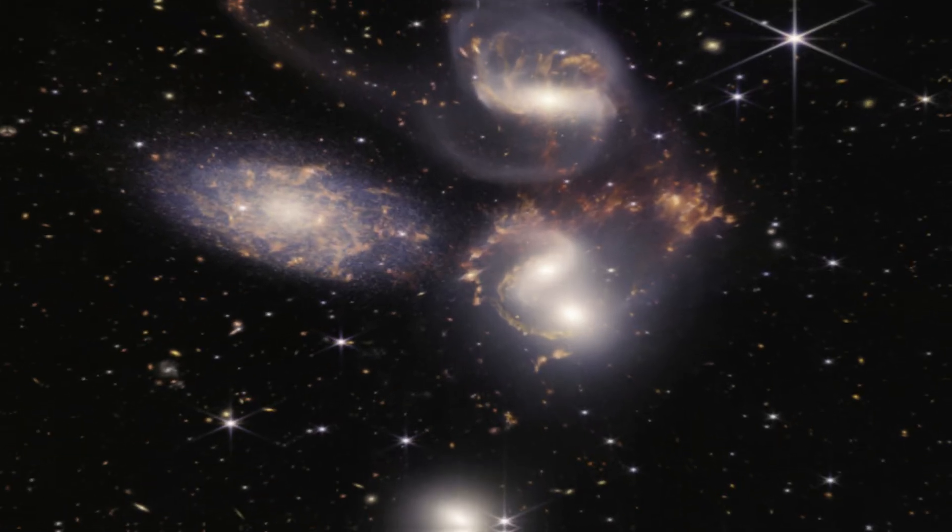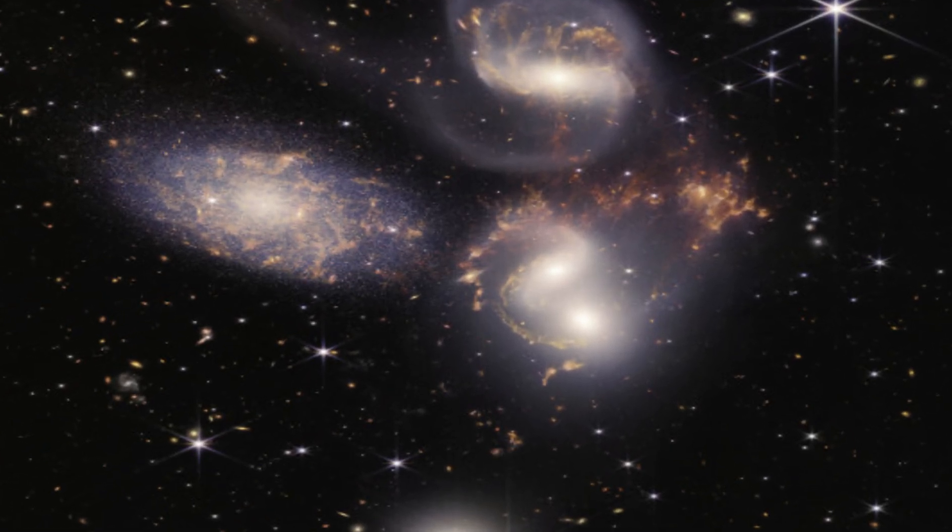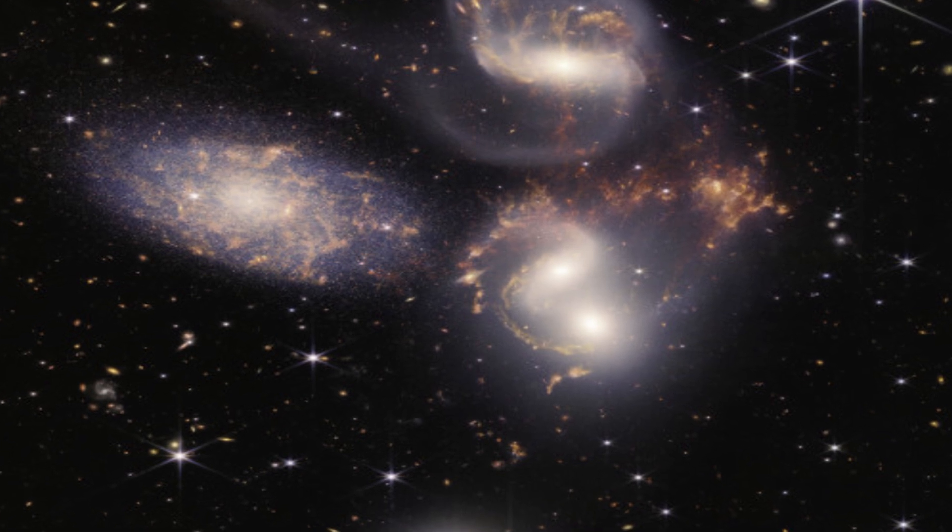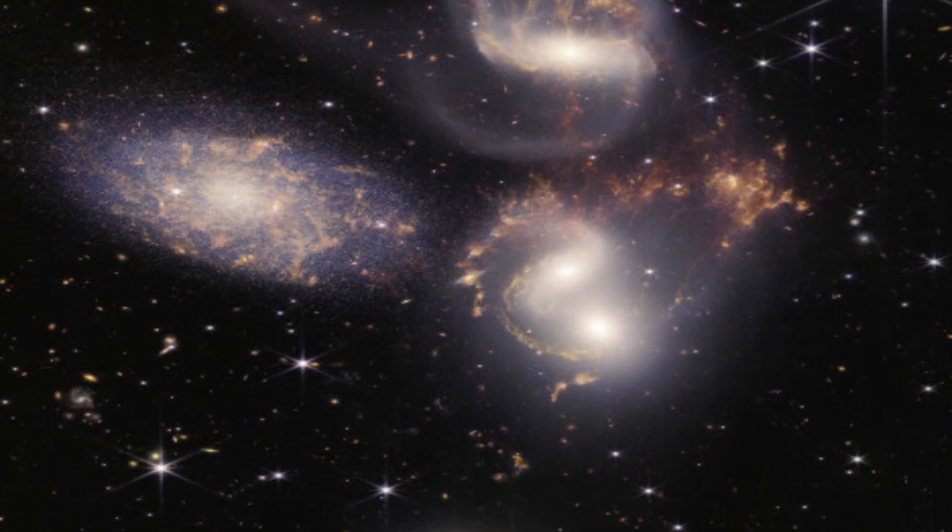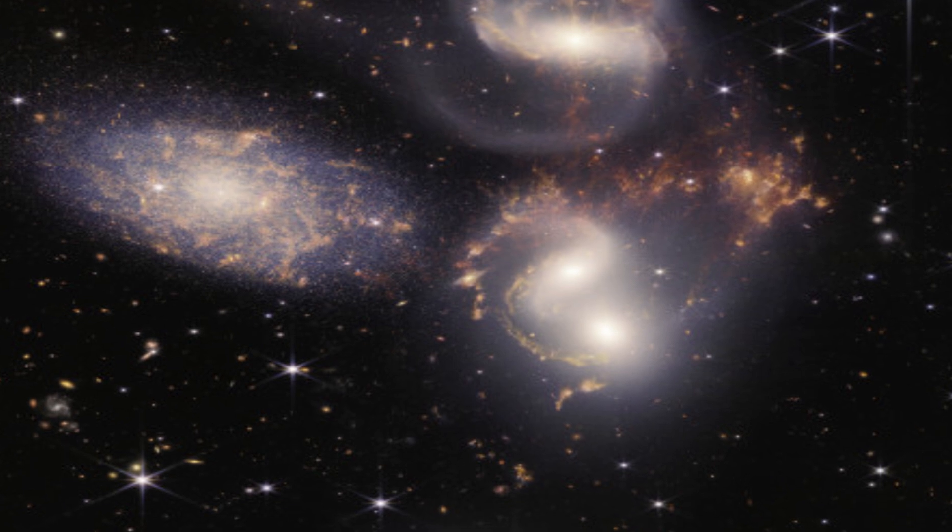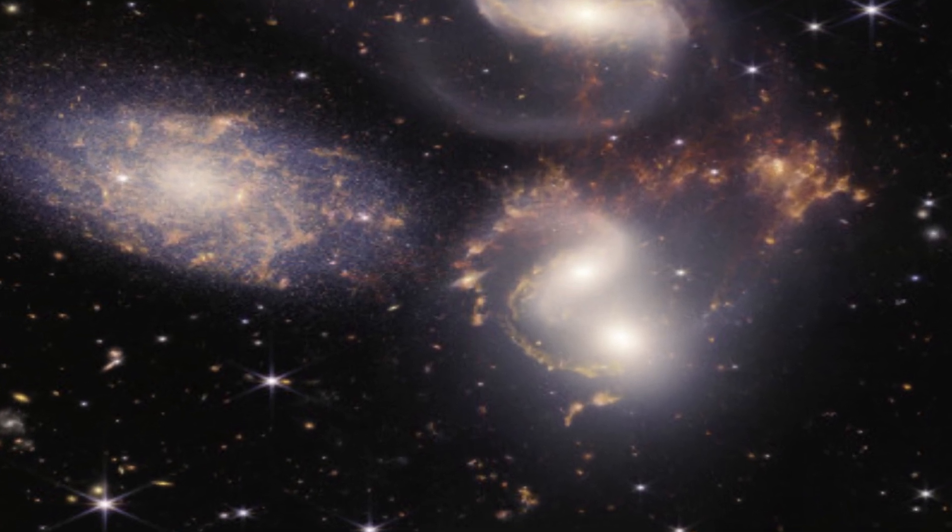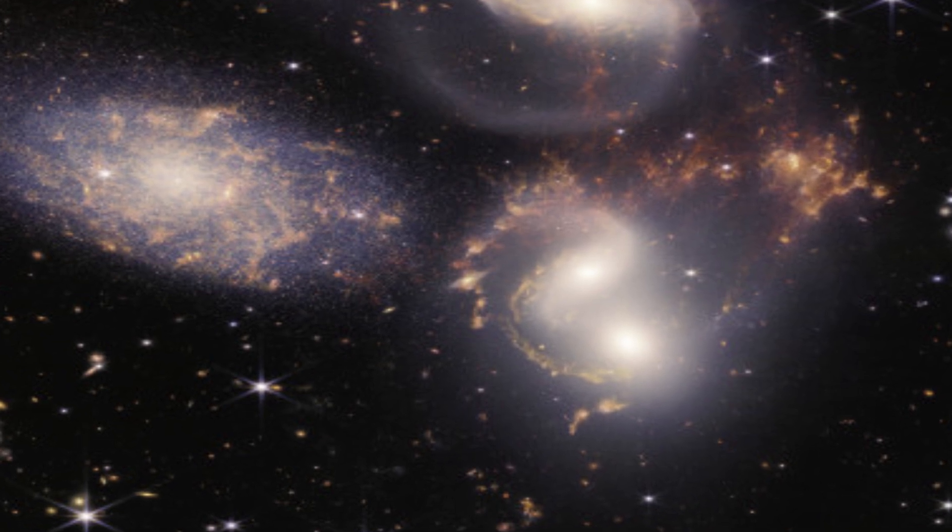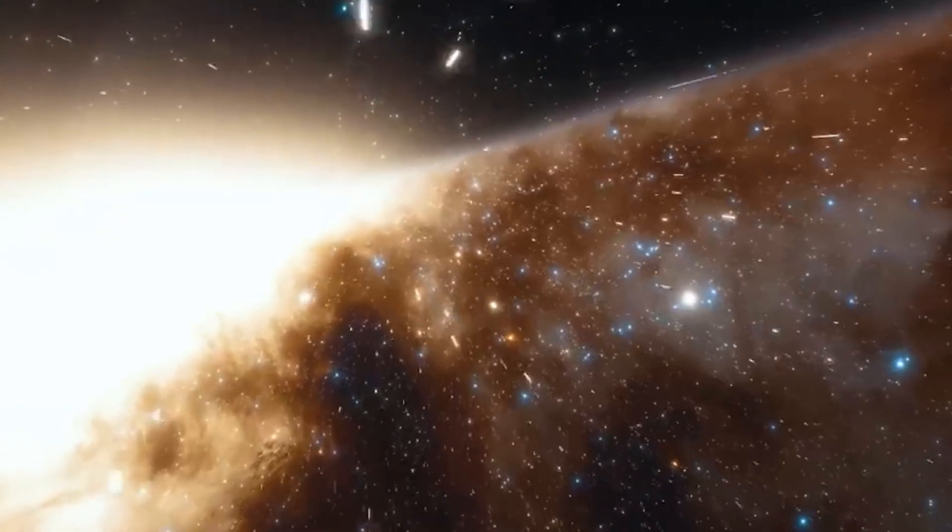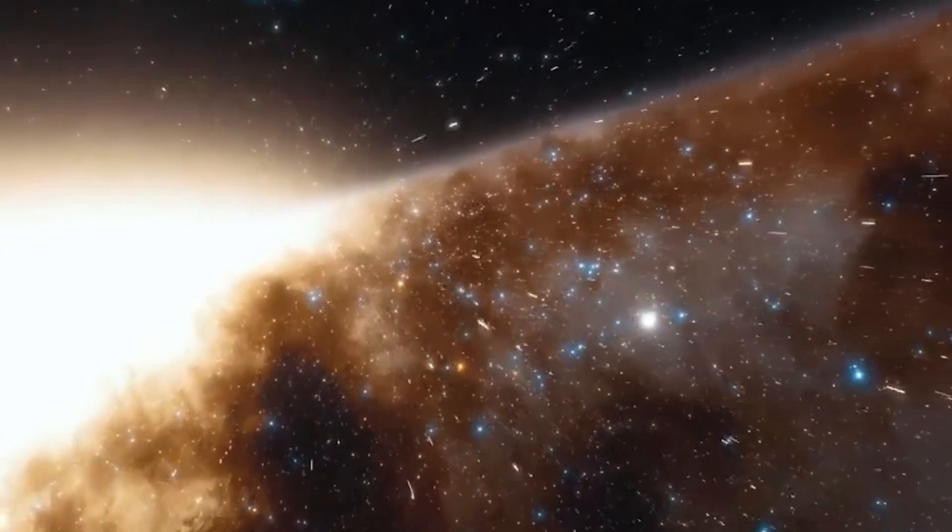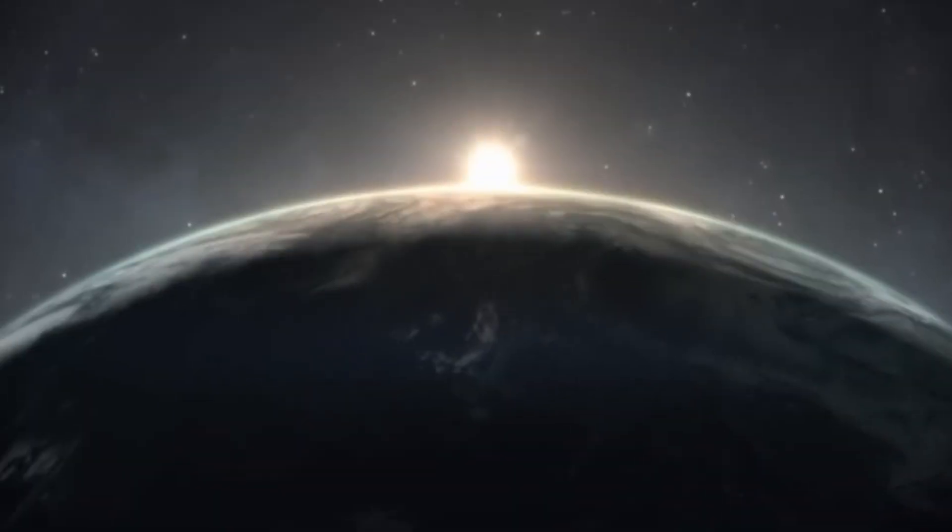Moving on to the Stephan's Quintet picture, the galaxy group that resides 290 million light-years from us has been discovered in 1877 and is frequently observed, making it the perfect target to aim James Webb to. What we can see here is a galaxy group of five and the very first one to be known as being interacting with each other.